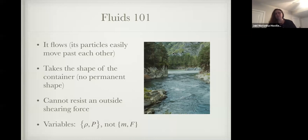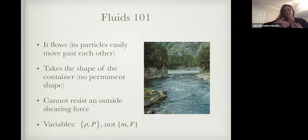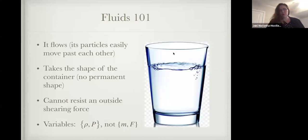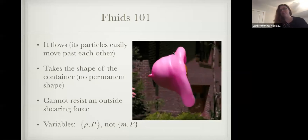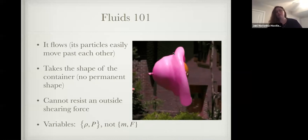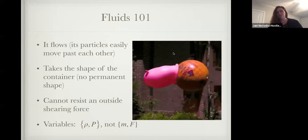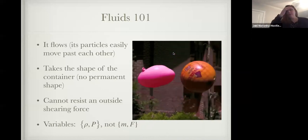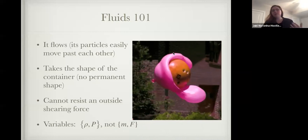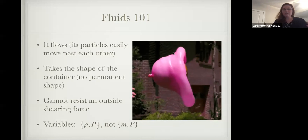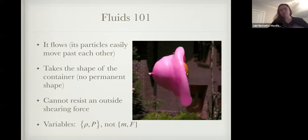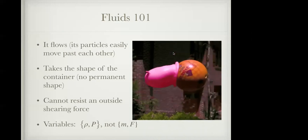Before we do that, let's go back to physics 101. When I talk to my undergrad students, what are the properties of a fluid? The first thing we think about is it flows — particles can easily pass past each other, like a river. Or we think about it taking the shape of a container; there's no permanent shape. My favorite example is a water balloon colliding with a bowling ball — it looks the way it does because it cannot resist a shearing force. And when we have a fluid, we think about densities and pressures, not mass and forces. Throughout my talk, whenever I talk about thermodynamics, we're talking about density.